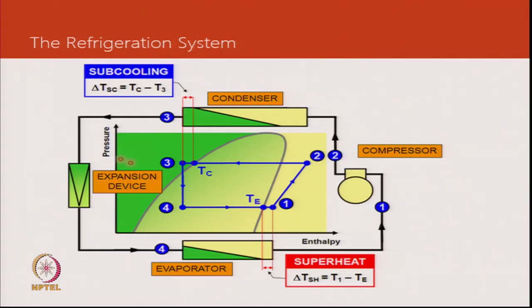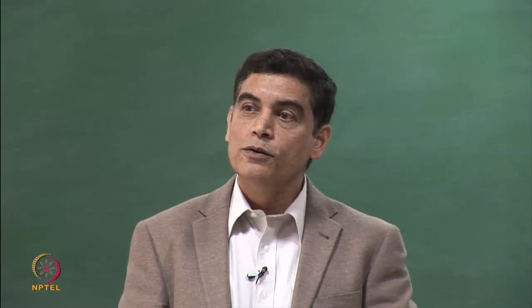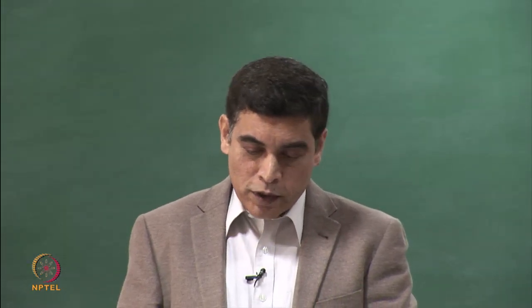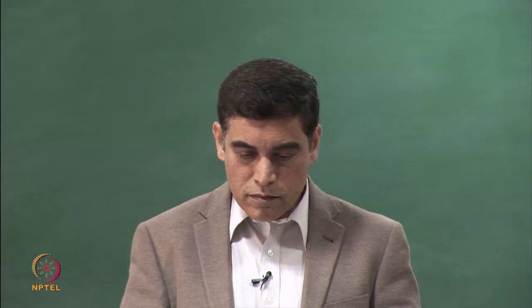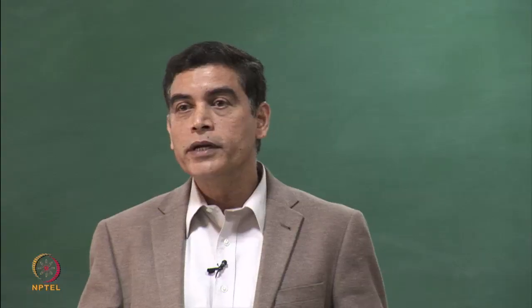Making an assumption on sub-cooling, knowing the pressure and the delta-P across the expansion valve allows us to select the expansion valve and then proceed to evaporator coil design. Additionally, we will be targeting a certain superheat in the evaporator — while not an explicit design input, we note it because we want to protect the compressor.